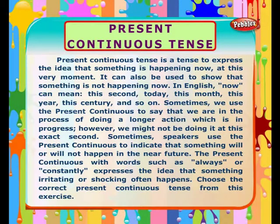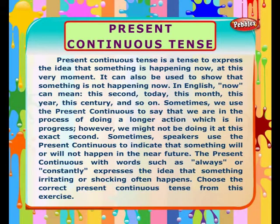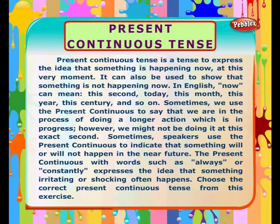Sometimes we use the present continuous to say that we are in the process of doing a longer action which is in progress. However, we might not be doing it at this exact second. Sometimes speakers use the present continuous to indicate that something will or will not happen in the near future.